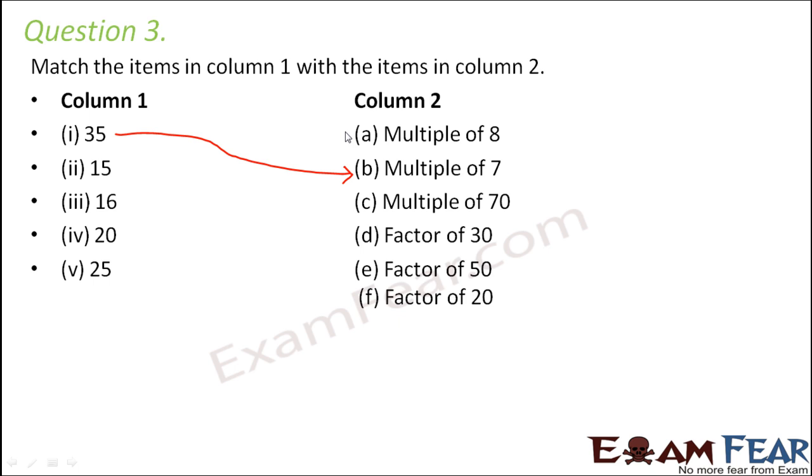15. What is 15? Is 15 multiple of 8? No. Multiple of 70? No. Because multiples of any number will always be greater than or equal to the number. So multiple of 70 has to be greater than or equal to 70. Factor of 30? Factor of 30, yes, that could be possible because in order to be factor of 30, 15 should exactly divide 30. So when you divide 30 by 15, what do you get? You can write 30 as 15 into 2. So therefore it leaves remainder 0. So therefore 15 is a factor of 30.